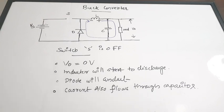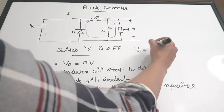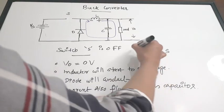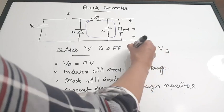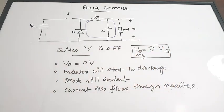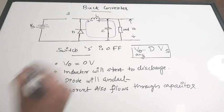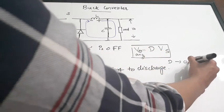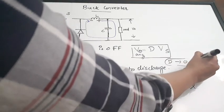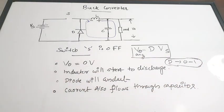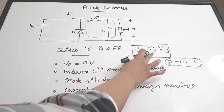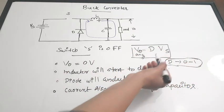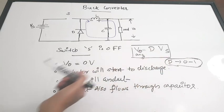We have seen both cases — switch ON and switch OFF. If you take the average value of the output voltage, you get the relation: V_out(average) equals duty cycle D times the supply voltage V_s. The duty cycle D varies from 0 to 1, so its maximum value is 1 — it will always be less than or equal to 1. So when D is between 0 and 1, the average output voltage will be less than the supply voltage.